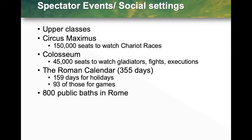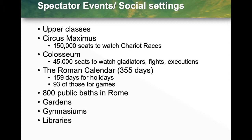In regards to social settings, there were 800 public baths in Rome — almost like a health club idea. They had large pools where people would get in, relax, and talk. There were also gardens, gymnasiums, and libraries. One thing about the Roman baths: they were segregated — there were baths for men and baths for women.